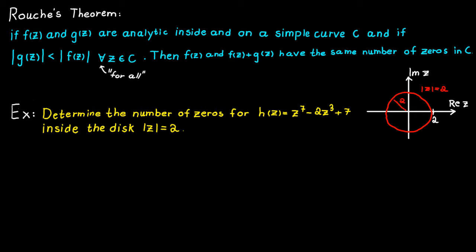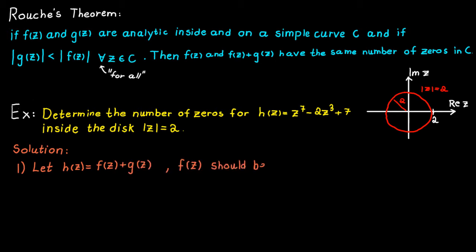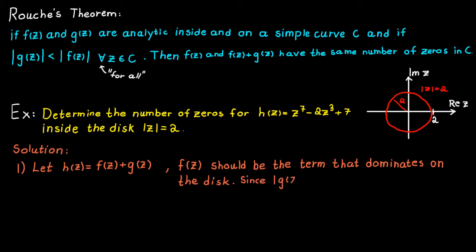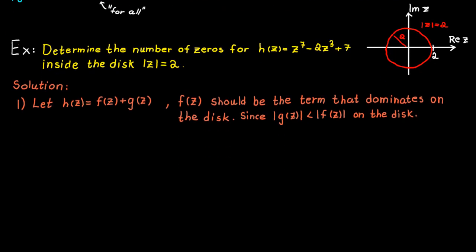To solve this problem, we first have to split the big function up into two smaller ones, which we will call f and g. The important thing is that f should be equal to the term in the original function that dominates on the disk, since we want the absolute value of f to always be bigger than the absolute value of g on the disk. So let's determine which term dominates on the disk.